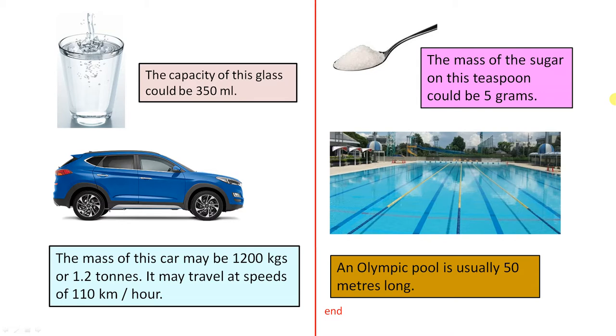The mass of this car might be 1,200 kilograms or 1.2 tons. You can have smaller cars than that and larger cars, and the mass will vary accordingly. It may travel at speeds of 110 kilometers per hour depending on the conditions of the road.